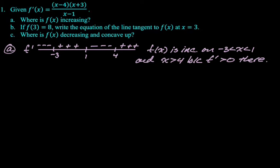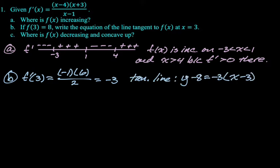If f of 3 equals 8, write the equation line tangent to f of x at x equals 3. All right, so we need to know f prime. We're given f of 3 is 8, so we just need to find f prime. So let's do that, f prime of 3, just sub in. You get negative 1 times 6 over 2, which is definitely negative 3. And then our tangent line in point slope form, y minus 8 equals negative 3 quantity x minus 3.